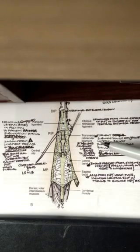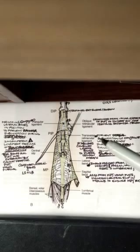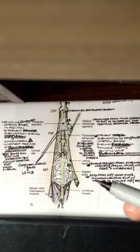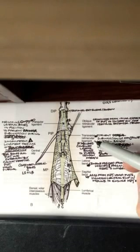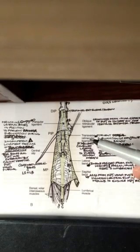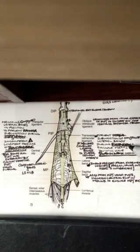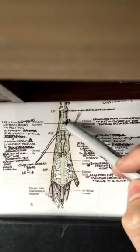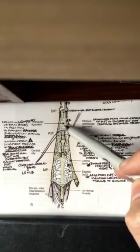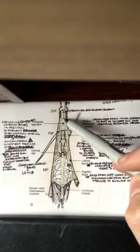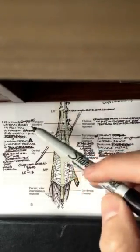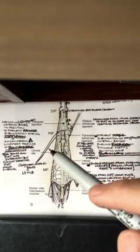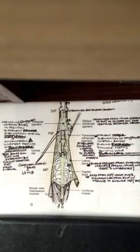Similarly, the transverse retinacular ligaments stabilize the conjoined lateral bands during extension. The triangular ligament also stabilizes the conjoined lateral bands, but it does it in a different way. We said the transverse retinacular ligament stabilizes the conjoined lateral bands during extension. Well, the triangular ligament, you can see here, it's kind of shaped like a triangle. It's in between the two conjoined lateral bands that are coming together to form the terminal extensor tendon. This triangular ligament is actually to prevent palmar, not dorsal subluxation during PIP joint flexion.